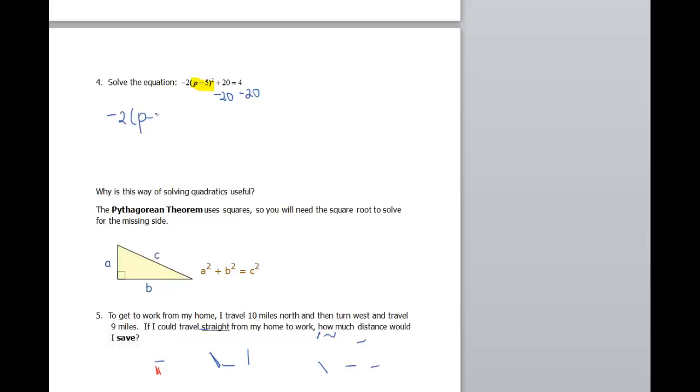So that gives me negative 2 times the quantity (p - 5) squared, and that's gonna equal a negative 16, 4 minus 20. Now we can go ahead and divide by negative 2. It's a little bit easier with this one. So we end up with (p - 5) squared is going to equal 8.